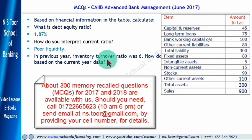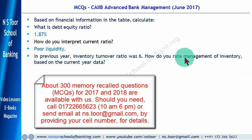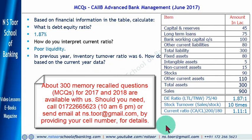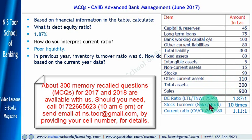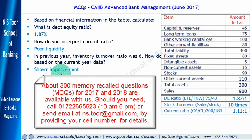In the previous year the inventory turnover ratio was 6. How do you rate the management of inventory based on current year data? Total sales are 900 and stocks value is 90, so the inventory turnover ratio is 900 divided by 90, which equals 10 times. Since the previous year ratio was 6 and the current ratio is 10, the ratio has increased, meaning stock management has shown improvement.